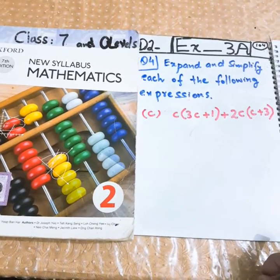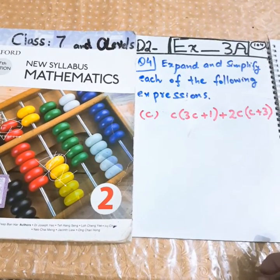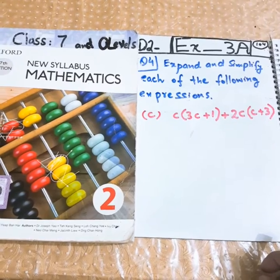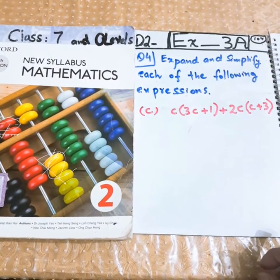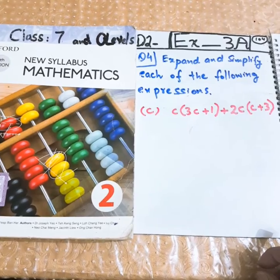Hello, Assalamualaikum students of class 7 and O levels. This is D2 Mathematics Exercises 3A. If you have the book available nearby you, you can open the book page 104. The question number is 4.